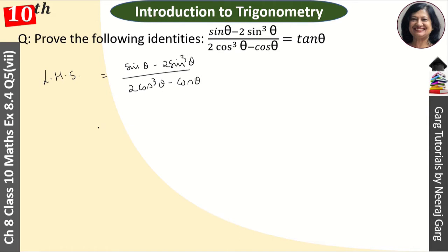So now, in the numerator, sin θ is common. This is 1 minus 2 sin² θ. And in the denominator, cos θ is common, so this is 2 cos² θ minus 1. In the next step, we write the numerator as is, we do not do anything.